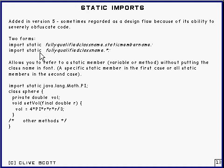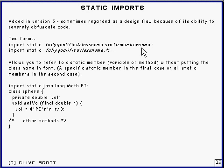There are two forms of static import. You write it like this: import static, followed by a fully qualified class name and a static member, which is either a variable or a method name. Or you can do import static fully qualified name dot star.